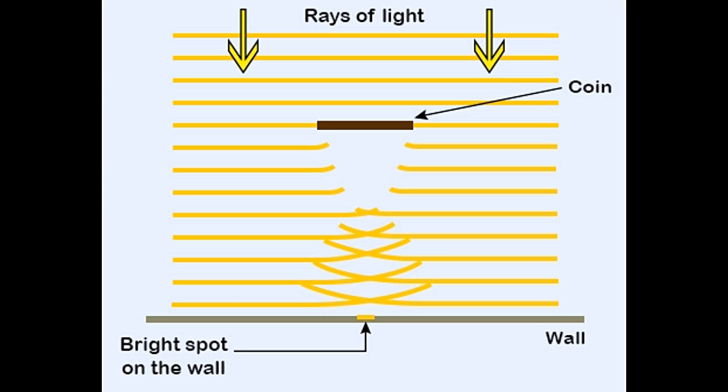When light encounters an obstacle in its path, it tends to cause the formation of a shadow in the region behind the obstacle. However, light also displays the wave-like quality of diffraction.